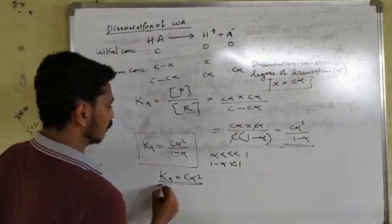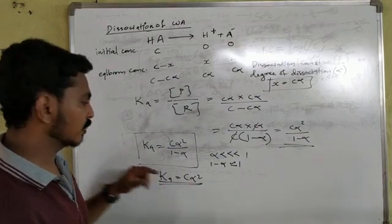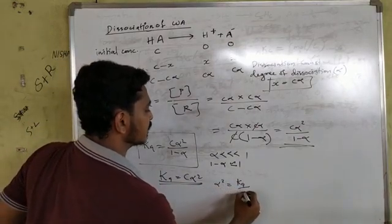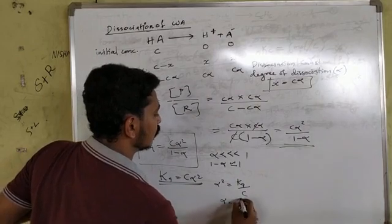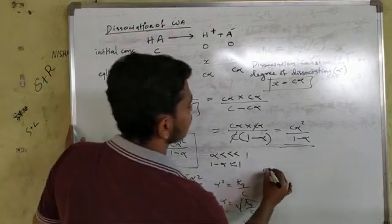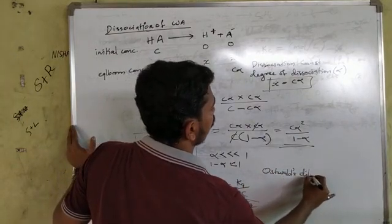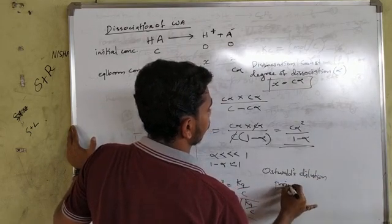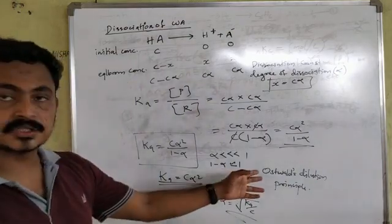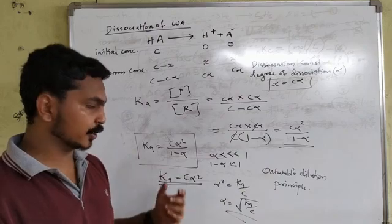When one minus alpha is approximately equal to 1, Ka equals C alpha squared. This is called Ostwald's Dilution Principle. Rearranging: alpha squared equals Ka divided by C, and therefore alpha equals the square root of Ka divided by C. This equation is Ostwald's Dilution Principle.